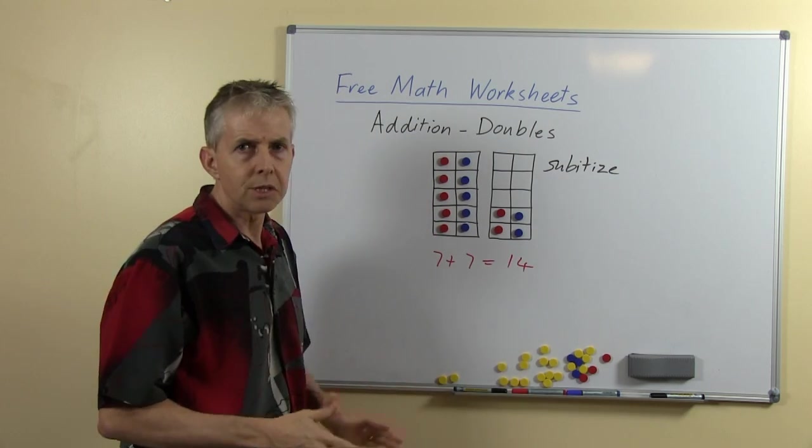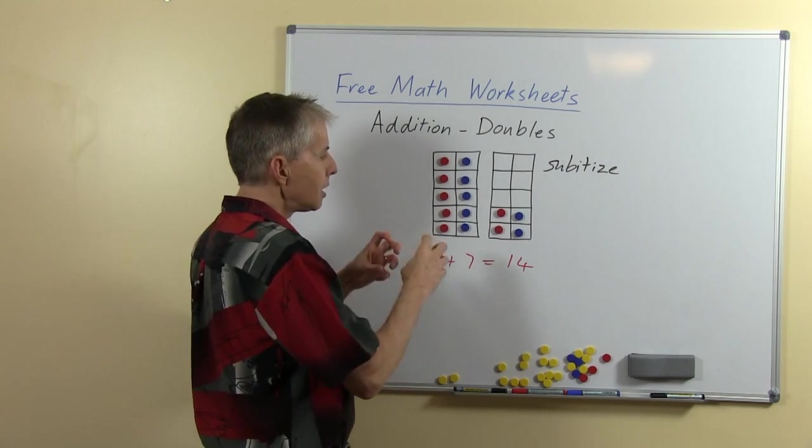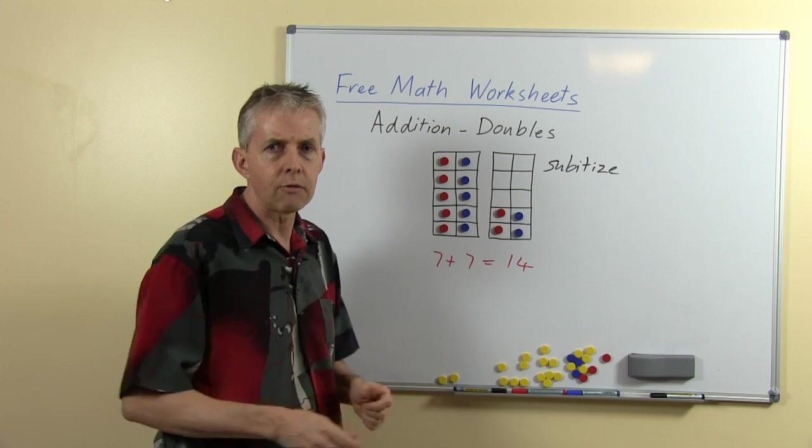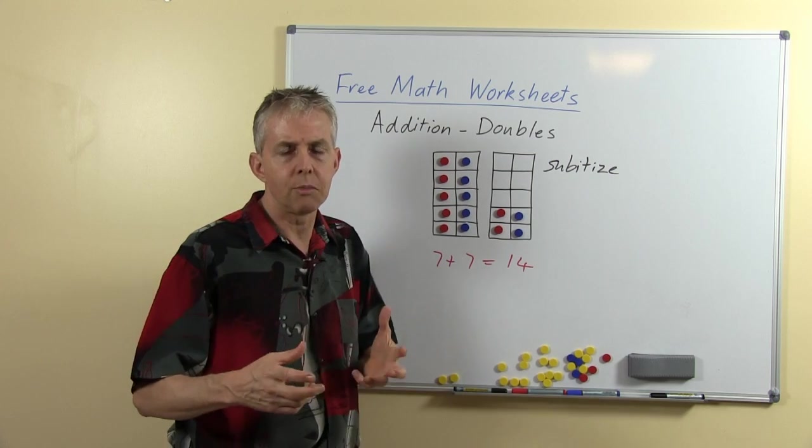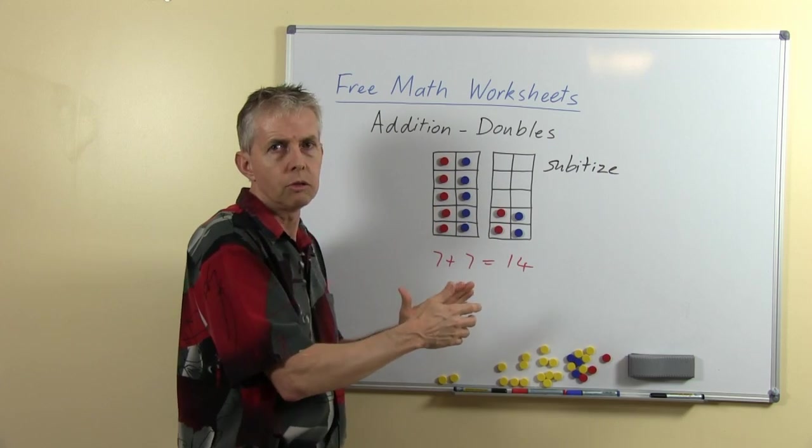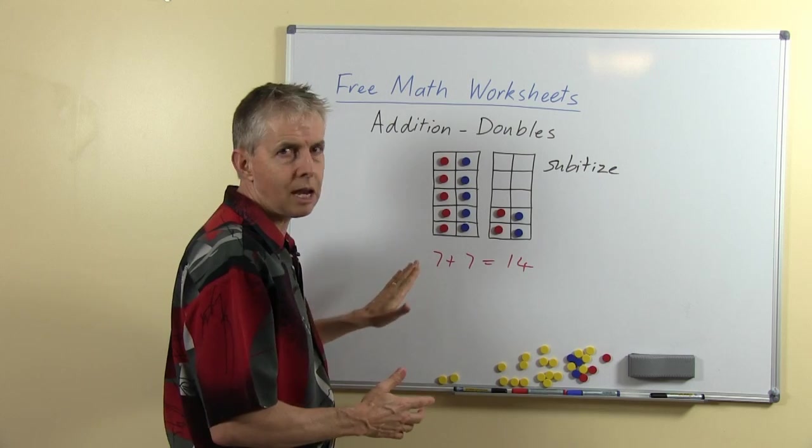By using the double 10 frame and two colors we can help the children to see that if we split, and I really want the students to do this in their head rather than writing the whole thing out, that would get a bit complicated. But in their heads to see that 7 is made of 5 and another 2. That will help because if we double the 5 obviously there's 10.